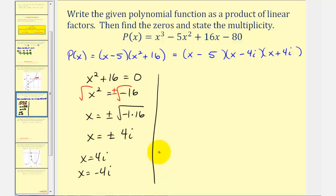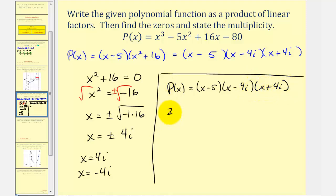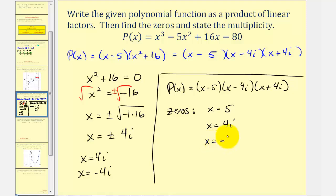To summarize, the polynomial function can be written as a product of linear factors: x minus five, times x minus four i, times x plus four i. The zeros, each with multiplicity one, are x equals five, x equals four i, and x equals negative four i.